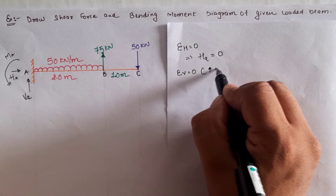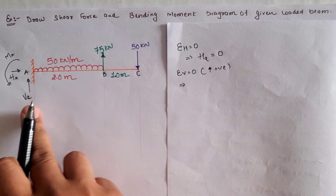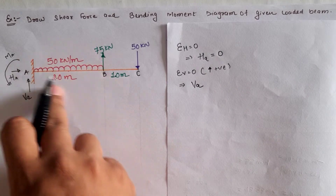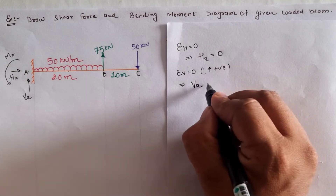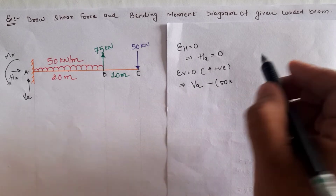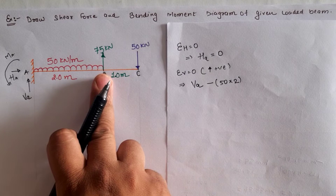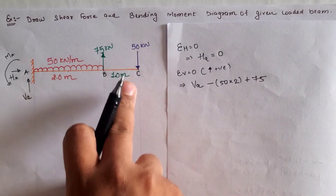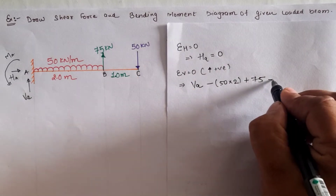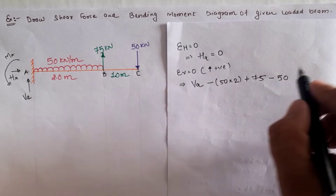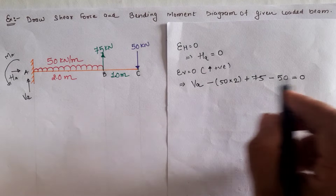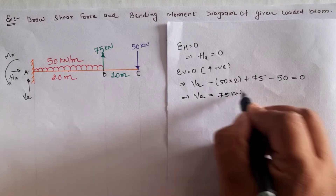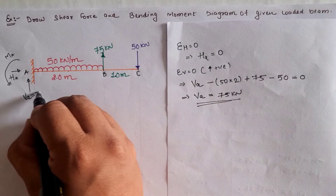Taking ΣV = 0 and assuming upward force as positive, VA is positive. The UDL total load is load times distance downward, hence negative 50 times 2. The 75 kilonewton load is upward so positive 75, and the 50 kilonewton load at C is downward so minus 50. Setting the sum equal to zero and solving gives the vertical reaction at A equal to 75 kilonewton, and the positive value confirms our assumed direction is correct.